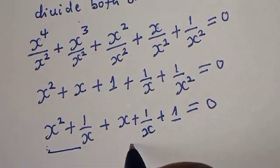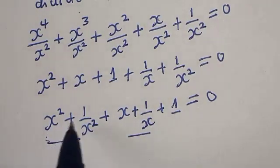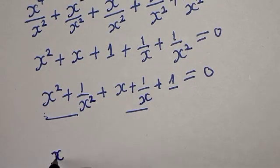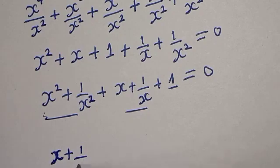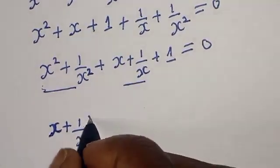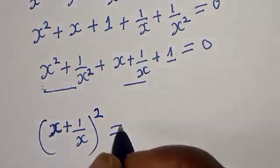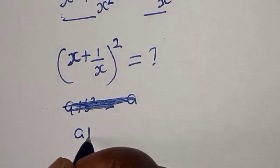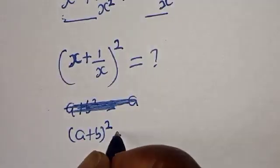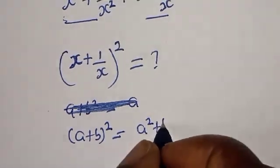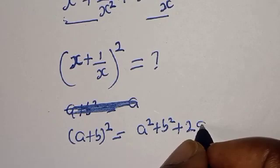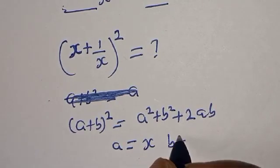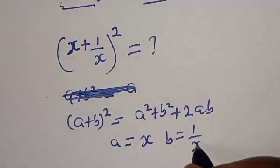We can group this: x squared plus 1 over x squared, and x plus 1 over x, then plus 1 equals 0. We need the value of x squared plus 1 over x squared. Recall that if A equals x and B equals 1 over x, then (A plus B) squared equals A squared plus B squared plus 2AB.